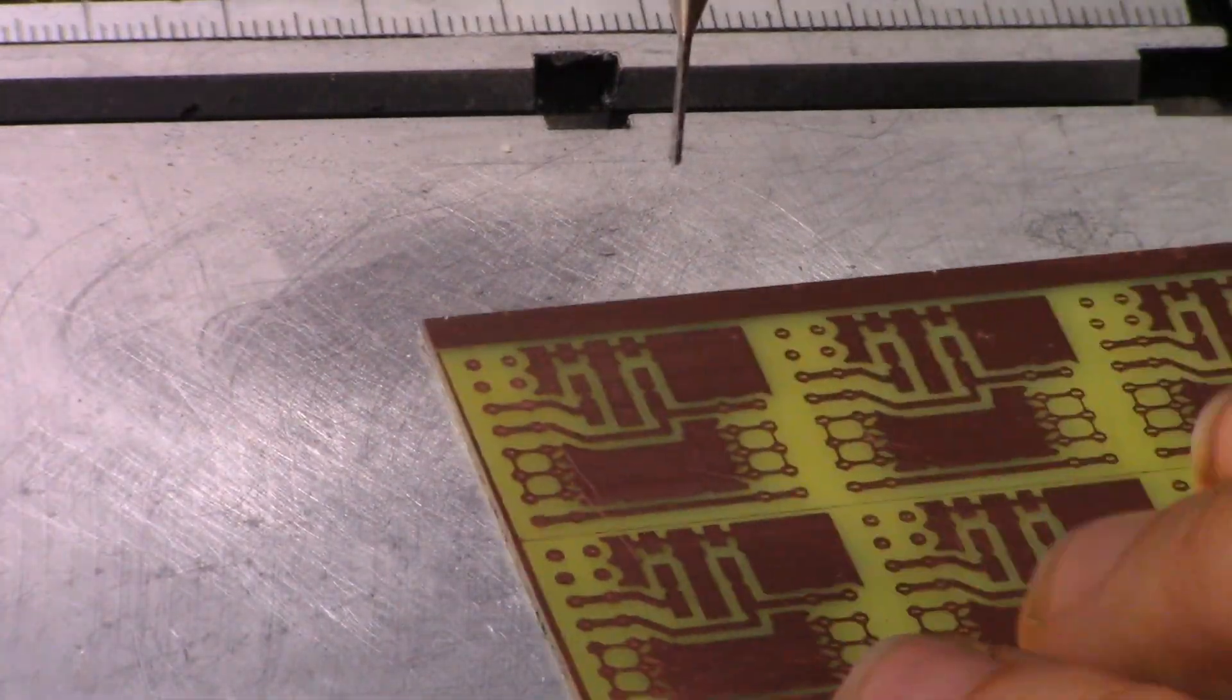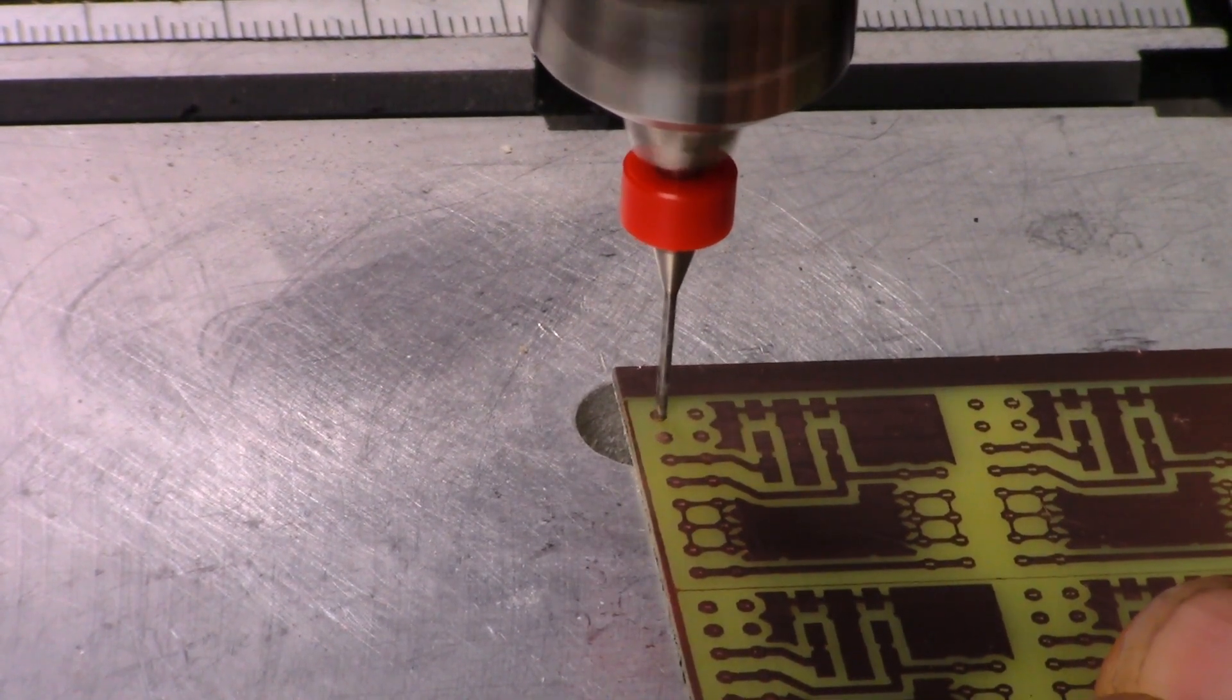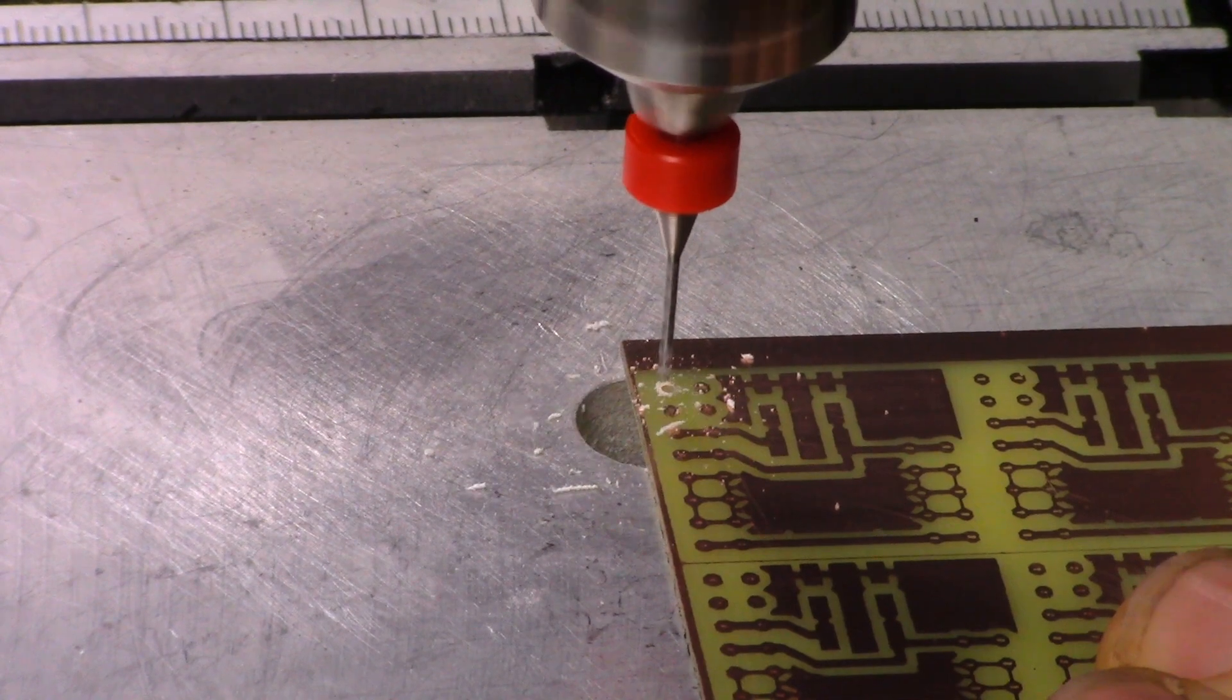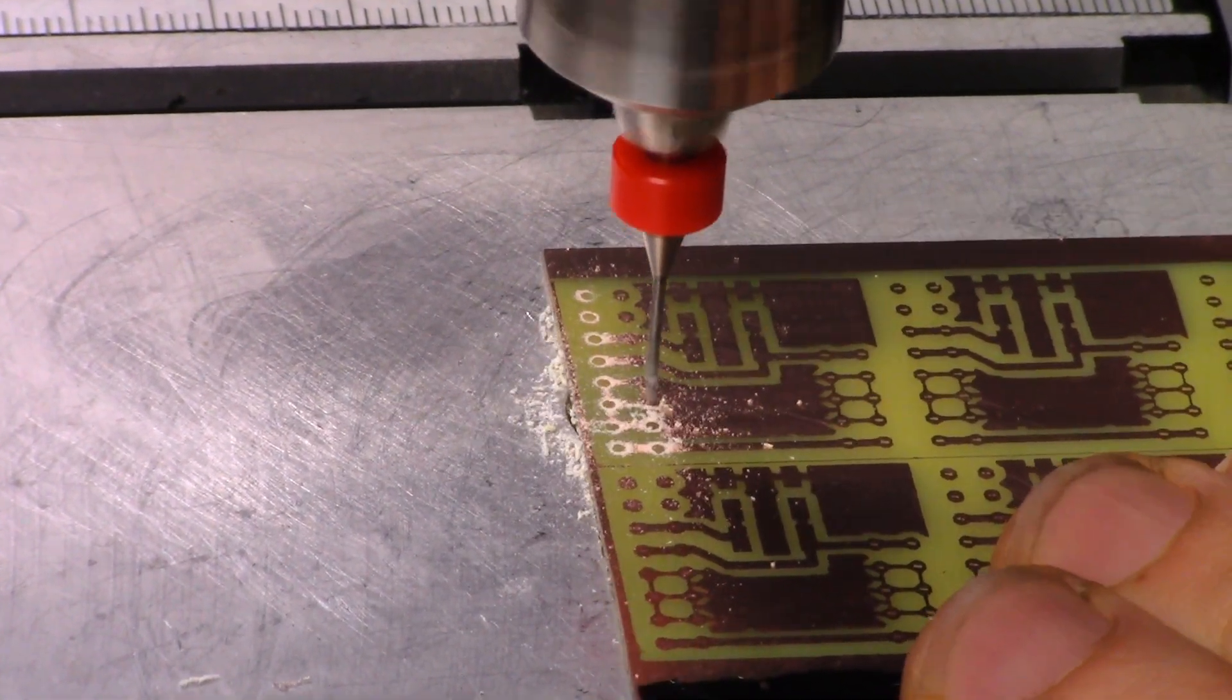A quick dip in some paint thinner and the resist is gone. Now to drill out all the holes. Drilling is easier when the boards are all one big block and easier to hold onto.